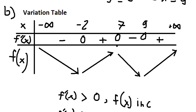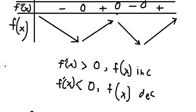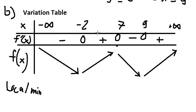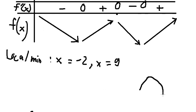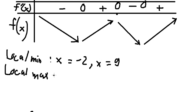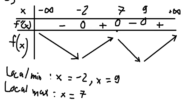Based on the graph, the locations where the function has a local minimum are at x equals negative two and x equals nine. There is a local maximum at x equals seven, because the function increases then decreases at that point. That is the final answer. This is the end — thank you for watching, I'll see you soon.